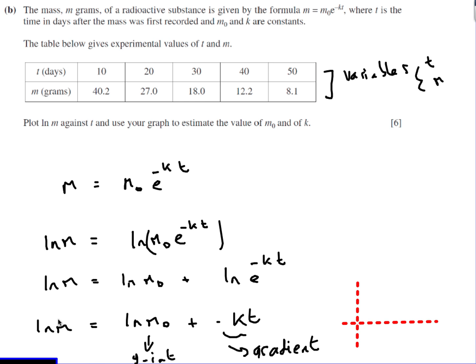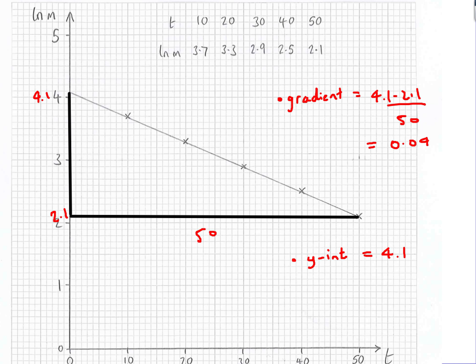This time ln m is on the y-axis, ln m₀ is just a number so it's the y-intercept, and minus k is the coefficient of t (the variable), so minus k is the gradient of our graph.